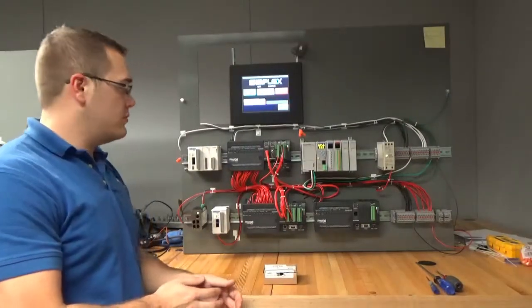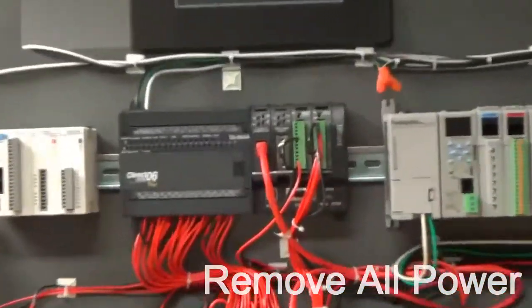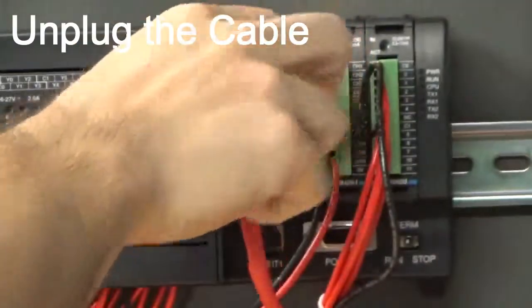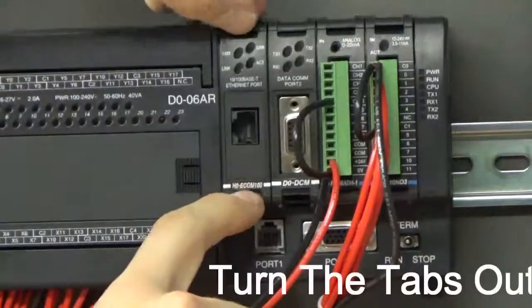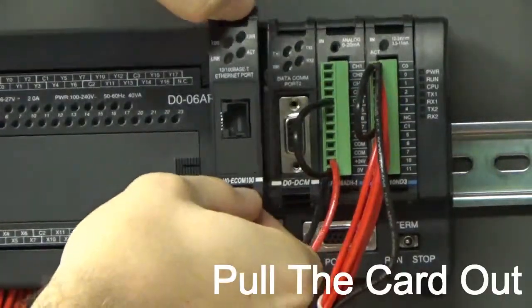Let's take a look at our Ethernet module. First of all, before removing it, we're going to remove all power, remove the Ethernet cable, turn the tabs out, and pull the card out. Pull it out nice and straight.